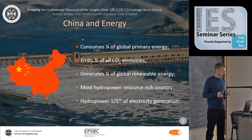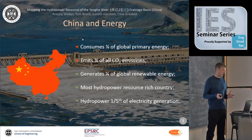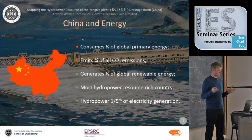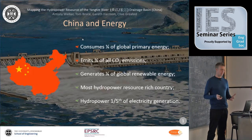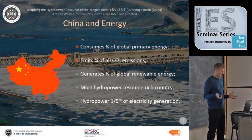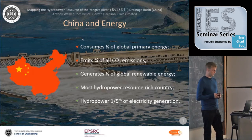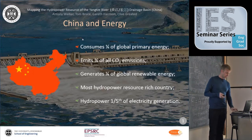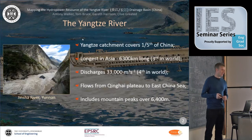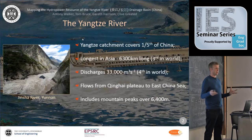China consumes a quarter of global primary energy and not surprisingly emits a quarter of all CO2 emissions. That's the negative picture of China, but it also generates a quarter of global renewable energy, is the most hydropower resource-rich country in the world, and produces a fifth of its electricity through hydropower.